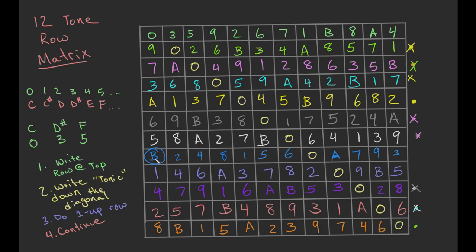I like to check my last note — if I have a B and it's the only one in that column, then I did something right. That is how you make a tone row matrix.